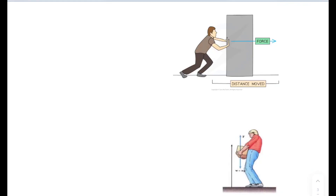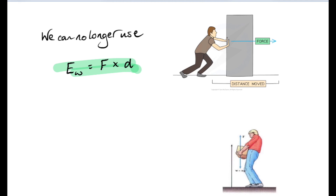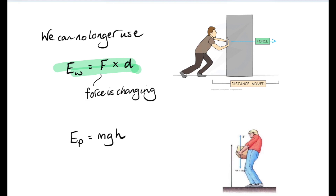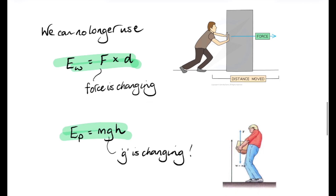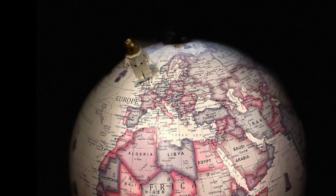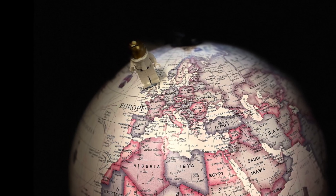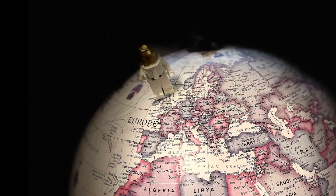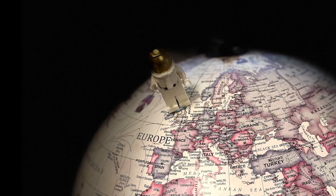And because that gravitational force changes with distance, we can no longer use equations that had a constant force in them — like work done as force times distance. If that force is changing, we can't use that equation anymore. Similarly, we can't use potential energy equals mgh, because the gravitational field strength is changing with distance. So we need to come up with a new set of relationships that can apply to doing work in a changing gravitational field. And for that, we need to introduce the idea of gravitational potential.